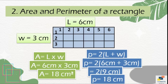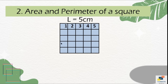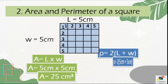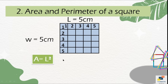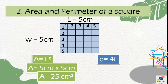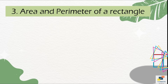Simply write the formula, put in the values, and find out the area and perimeter. If a square is given on a grid, count the number of columns for length and the number of rows for width, starting from the first box — the answer is 5 centimeters. Using the shortcut formulas: area equals l squared, so 5 × 5 = 25 centimeters squared. Perimeter equals 4l, so 4 × 5 = 20 centimeters.